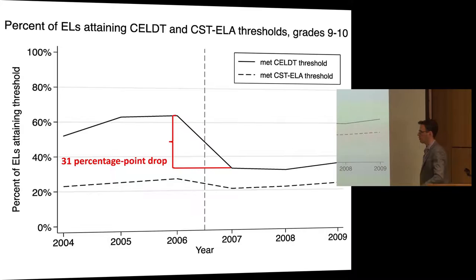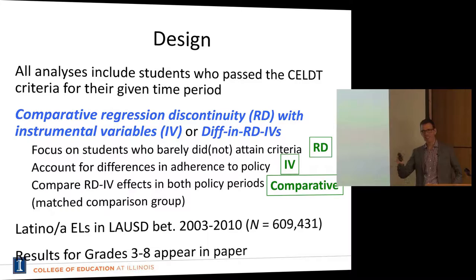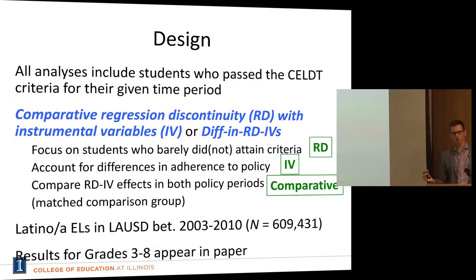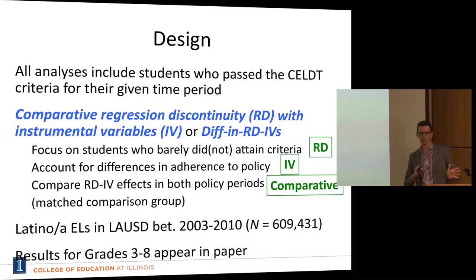We now know there was a lower threshold in the pre-2007 period and a higher threshold in the post-2007 period. So we're going to test the effects of reclassification at the threshold in the pre-2007 period, test it again in the post-2007 period, and see if the policy change had any effect on subsequent outcomes. Mainly we want to see if we went from null effects to positive effects, from negative to null, or if the policy overshot.